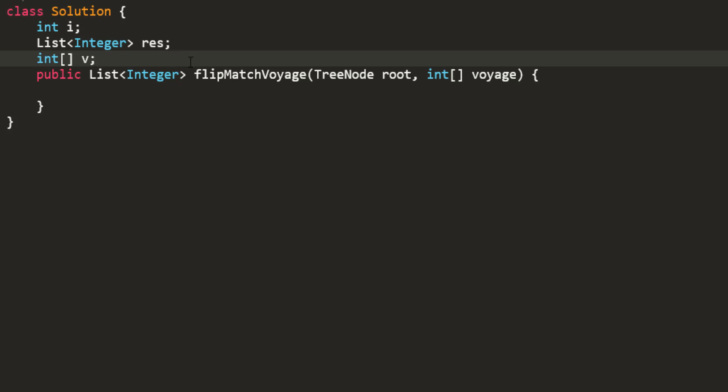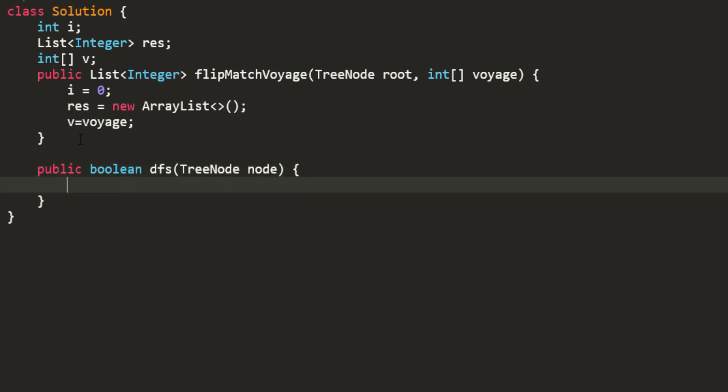These will be my index, my result, and my voyage, and I'll assign them. We'll also have a DFS function which would have a return type of boolean, and in this we'll pass the tree node. First thing we check: if the node is equal to null that means we can return true.